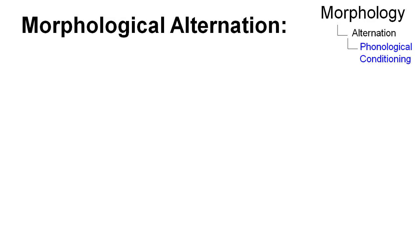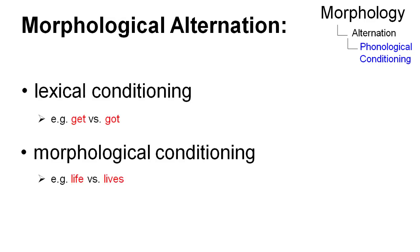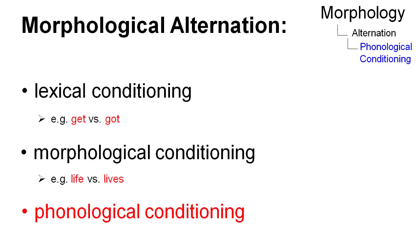Morphological alternation is subject to three types of conditioning: lexical conditioning, morphological conditioning, and phonological conditioning. Of the three, phonological conditioning is the most general and productive type of conditioning.